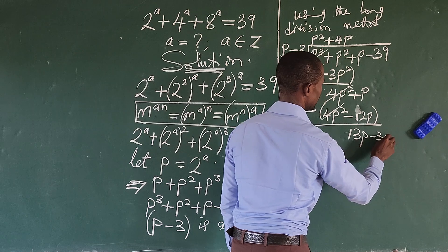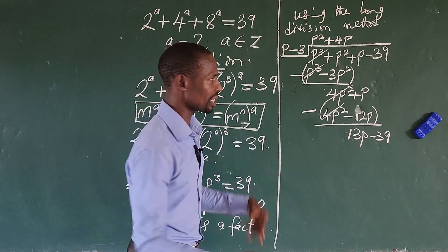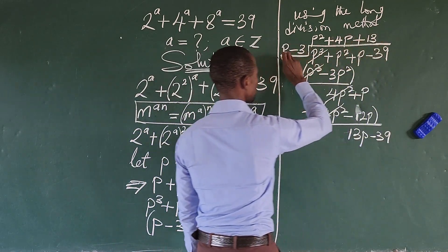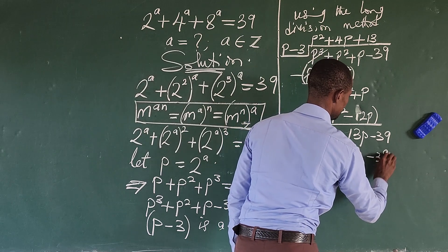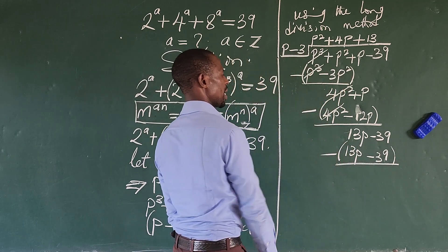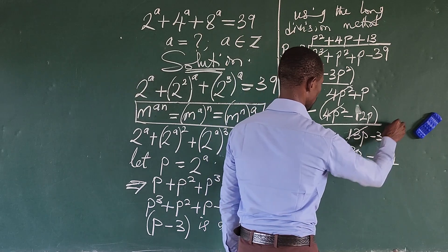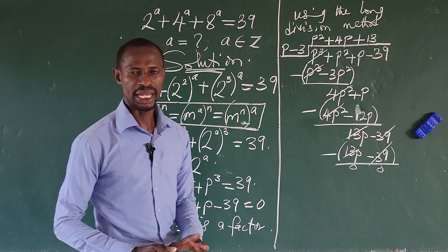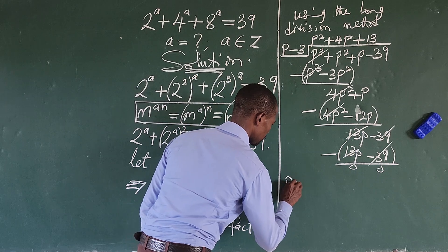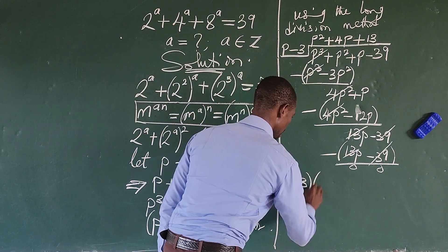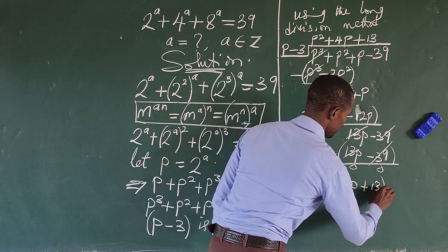We do the last division. p into 13p gives us 13. So we have plus 13 in the quotient. We use 13 to multiply p, which gives us 13p. Then we use 13 to multiply minus 3, which gives us minus 39. We do our subtraction again. Minus 39 plus 39 gives us 0. At the point where we have 0, we bring our quotient and our divisor together, eliminating the dividend. We have our p minus 3 as our divisor, and our quotient is p to the power of 2, plus 4p, plus 13, everything equal to 0.